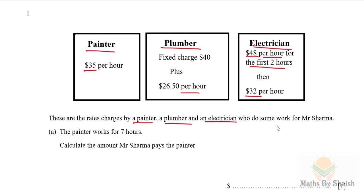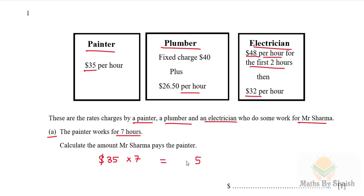Part A: the painter works for seven hours for Mr. Sharma. The painter charges $35 per hour, so for seven hours the cost is $35 multiplied by 7. That gives us $245, so the cost of the painter is $245.